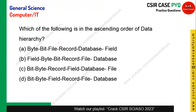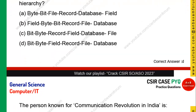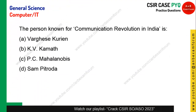Which of the following is an ascending order of data hierarchy? Ascending means shortest to largest. Bit is the shortest unit, so eliminate options with bit not first. A combination of bits is a byte; a combination of bytes is a field — not a record. Option C is also eliminated. So option D is the right answer for ascending data hierarchy order.